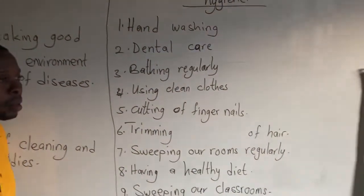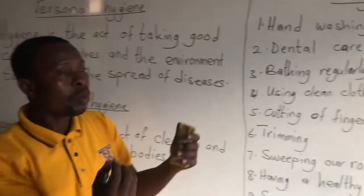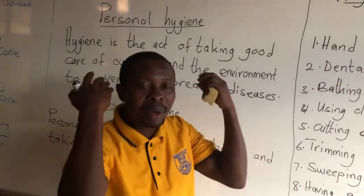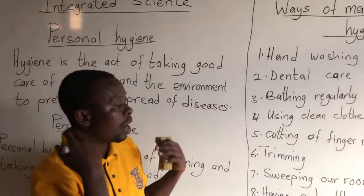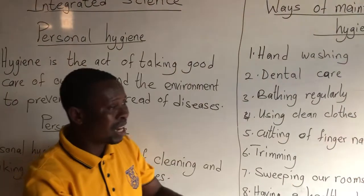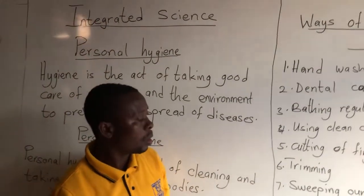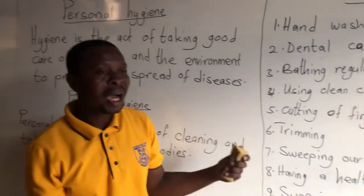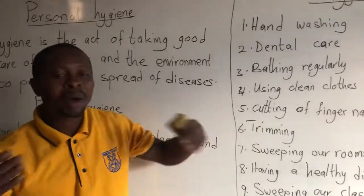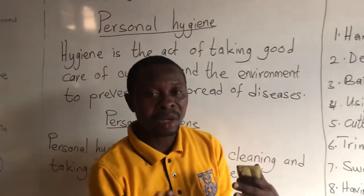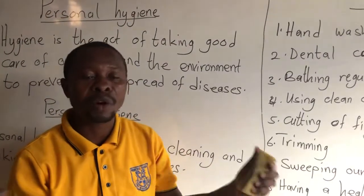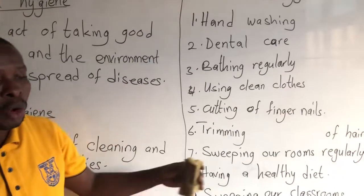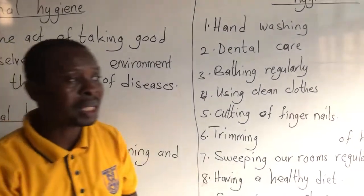We have to cut our fingernails regularly. We also have to trim our hair regularly — cut our hair and trim it to a nice, acceptable level. Then we also have to sweep our rooms regularly. When we are talking about personal hygiene, we are talking about keeping everything — our surroundings and ourselves — clean. So when we are wearing neat dresses but our room is dirty, there will still be spread of diseases. As we are keeping ourselves clean, we have to keep our rooms clean too, and clean the room always.